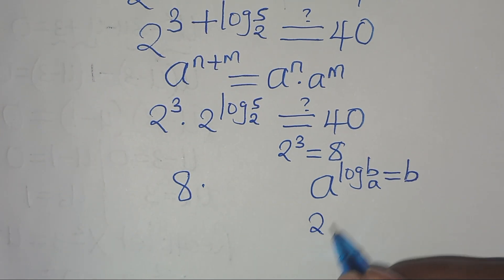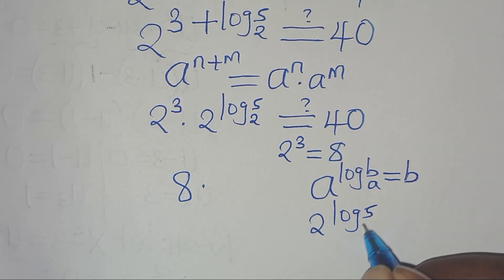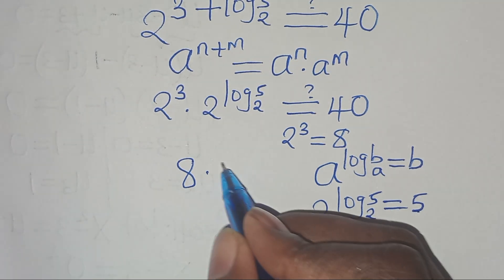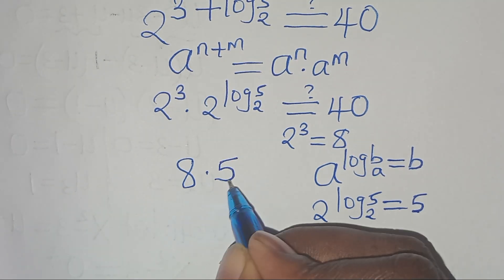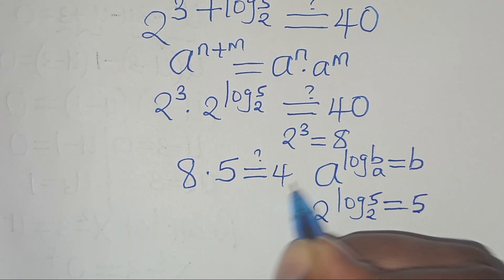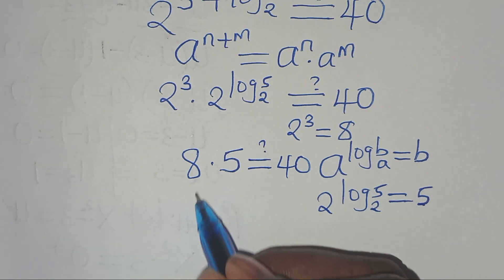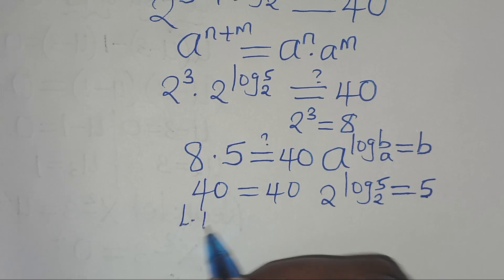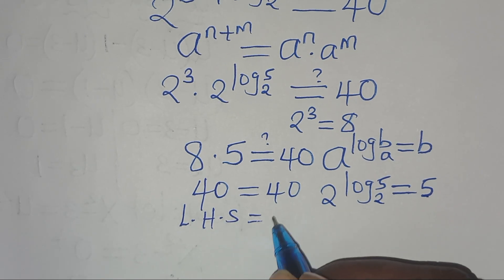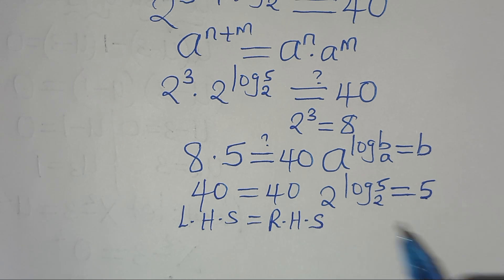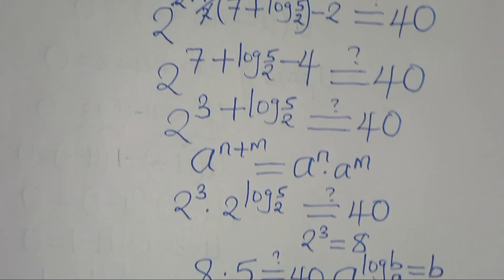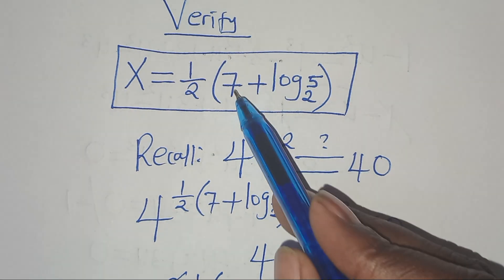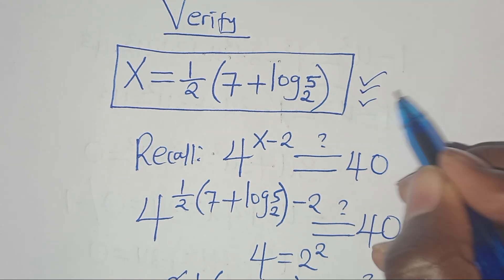Now 2^3 equals 8. And 2 to the power of log₂5 is in the form a^(log_a b), which equals b. So 2^(log₂5) equals 5. Substituting back, we have 8 times 5, which equals 40. The left-hand side equals the right-hand side, confirming that x equals one-half times (7 + log₂5) satisfies the equation.